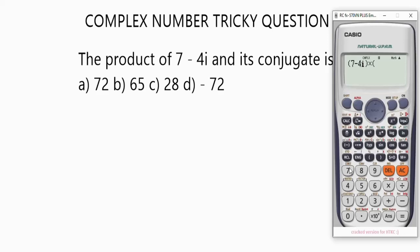We have times, in brackets, our conjugate is 7 plus 4i. So this is the i where you see the i symbol. Close the brackets. Let's press equals now and see what we're going to have as the product of this complex number.